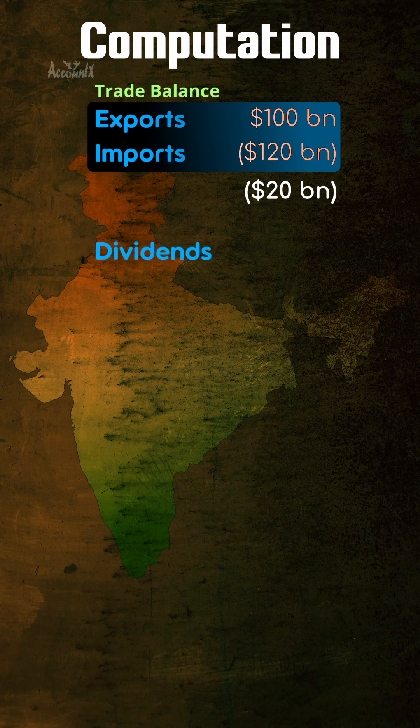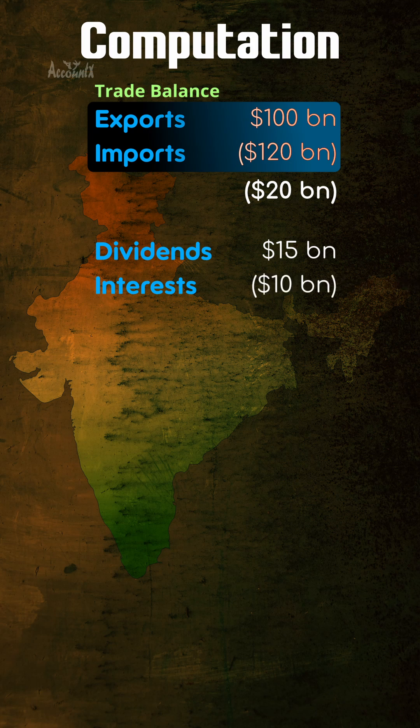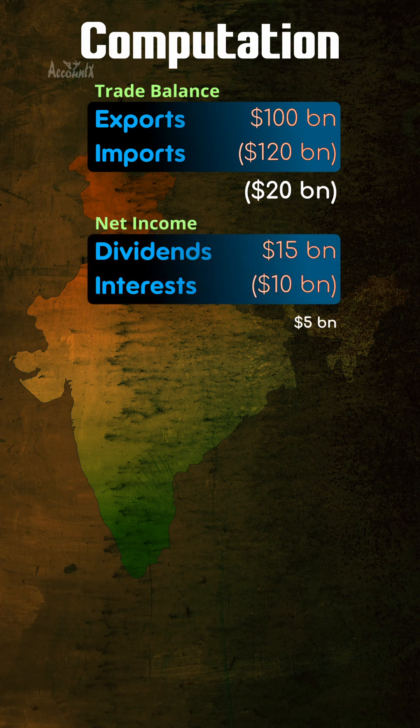Then let's say dividends received from foreign investments is $15 billion and interest paid to foreign investors is $10 billion. So this category has a surplus of $5 billion.